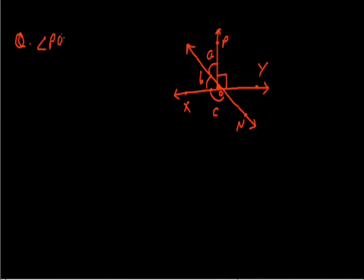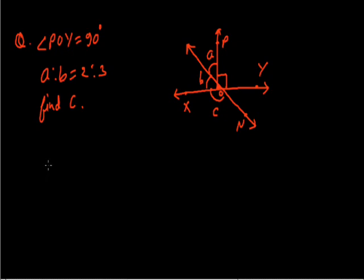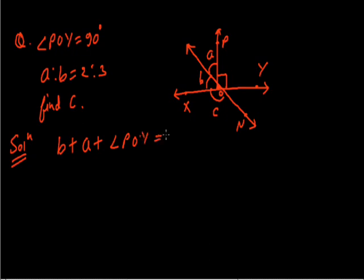In the given figure, it is given that angle POY is 90 degrees, and the ratio of A to B is 2 to 3. We have to find angle C. As we know that XY is a straight line, the sum of all the angles made on this line should be 180 degrees. So angle B plus angle A plus angle POY should equal 180 degrees.